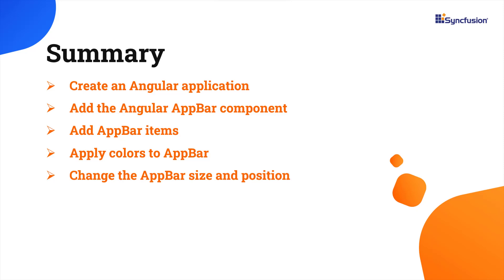In this video, I showed you how to configure the Syncfusion Angular app bar component using the Angular CLI tool and the Syncfusion EJ2 Angular Navigations package. I also showed you how to configure a few of the control's basic features. You can download a working example from the GitHub link in the description. I've also included a link where you can see if you're eligible for our community license, which provides a free license key to use our products. Thank you for watching — if you found this video useful, give it a like and subscribe to our channel.